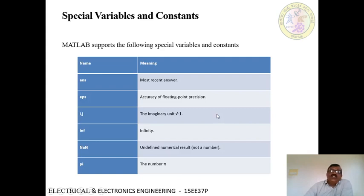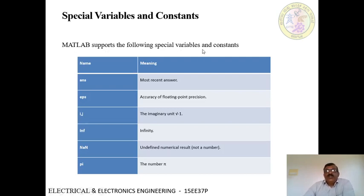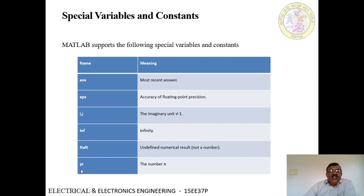There are some special variables and constants used in MATLAB. MATLAB supports the following: ANS — the most recent answer, a default variable; EPS — accuracy of floating point precision; IJ — imaginary unit; infinity; NaN — not a number, an undefined numerical result; and pi — the number pi, whose value is equal to 3.14.